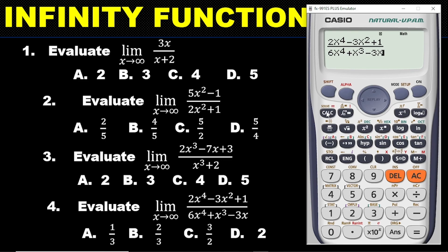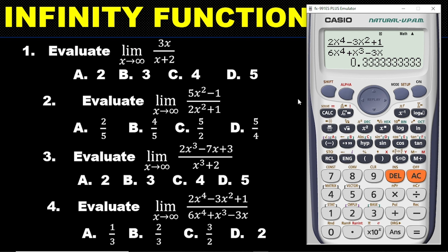Once you are convinced, press the calc button. The limit is as x approaches infinity, so click 9 twelve times for a huge number, then press the equal sign. The result is 0.33333 recurring, which means the answer is 1/3. So the correct answer is option A.